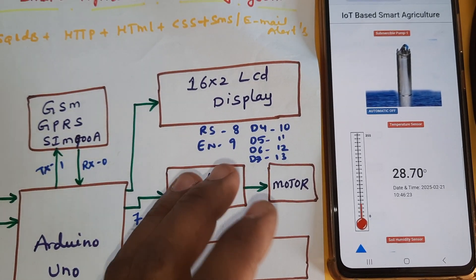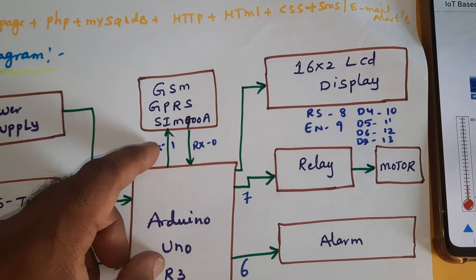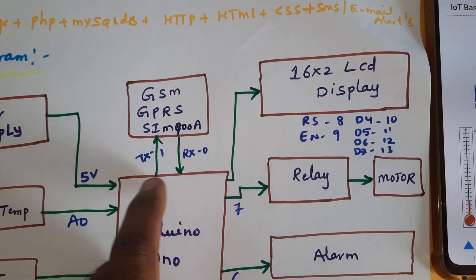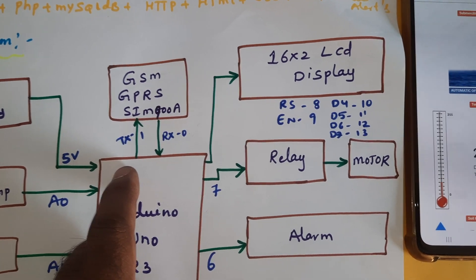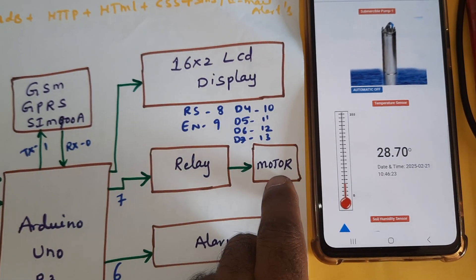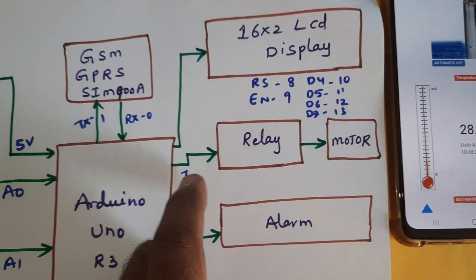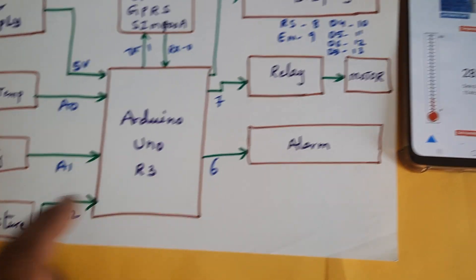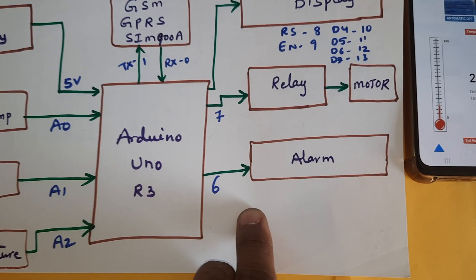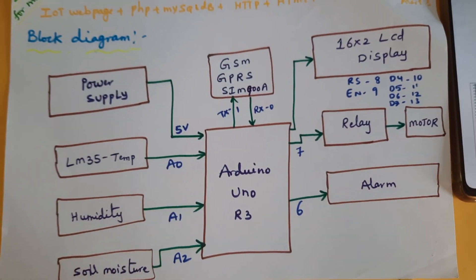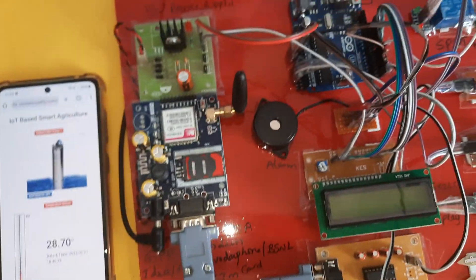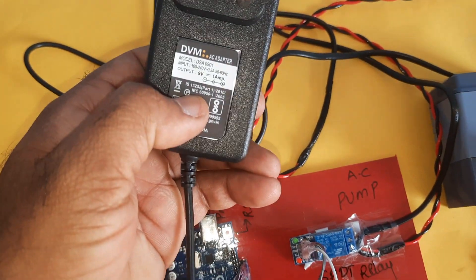The LCD pin connections are RS, Enable, D4, D5, D6, D7 on GPIO pins 8, 9, 10, 11, 12, 13. We are using a GSM/GPRS modem SIM 900D module connected via RX/TX pins 0 and 1. One SPDT relay and one AC pump are connected to the 7th pin. An alarm for beep sound for the soil moisture sensor purpose is connected to the 6th pin.